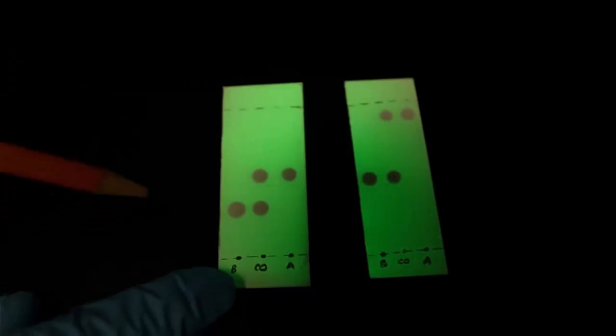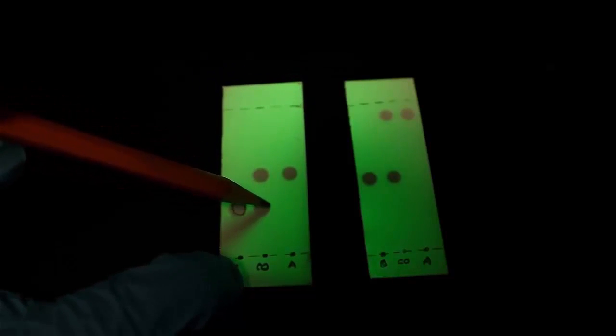Once your TLC plate has dried, place it under UV light and circle all markings with a pencil. Never look directly into the UV light because it will likely damage your eyes.